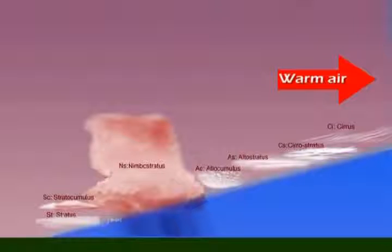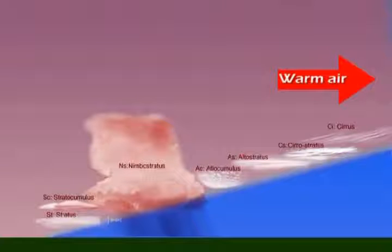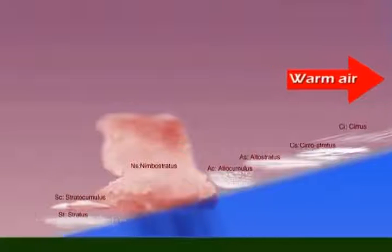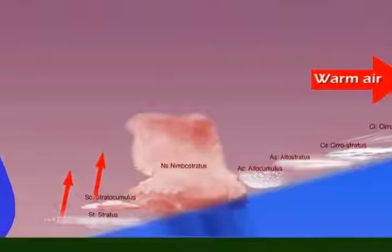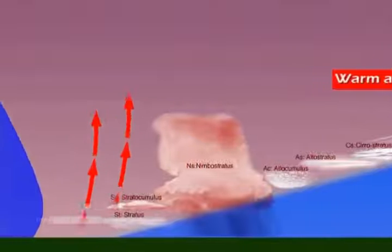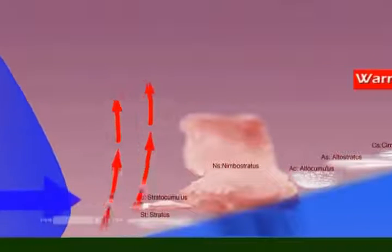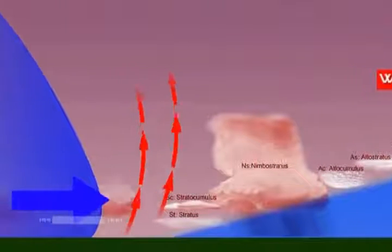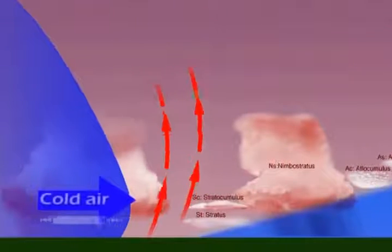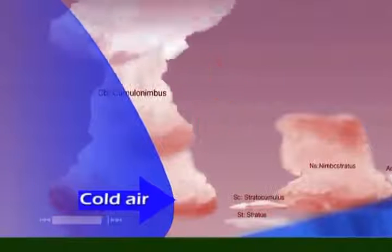The mass of cold air, being denser, undercuts the warm air, forcing it to rise. The warm air condenses quickly and abruptly, causing storm clouds such as cumulonimbus to form.